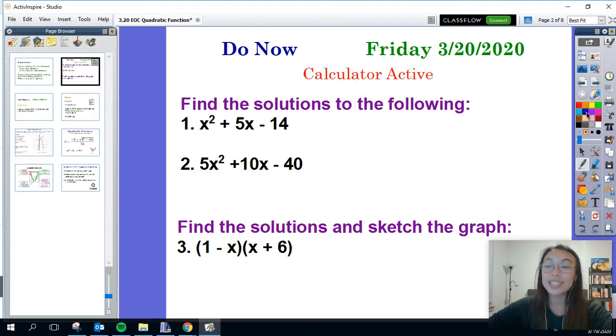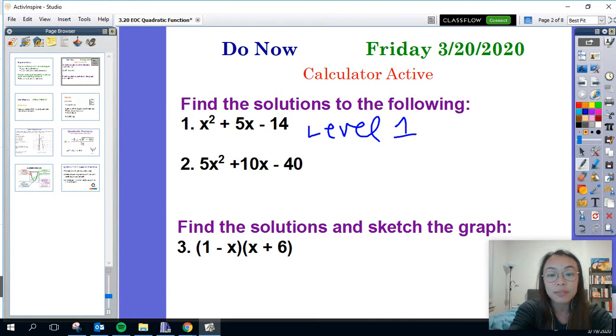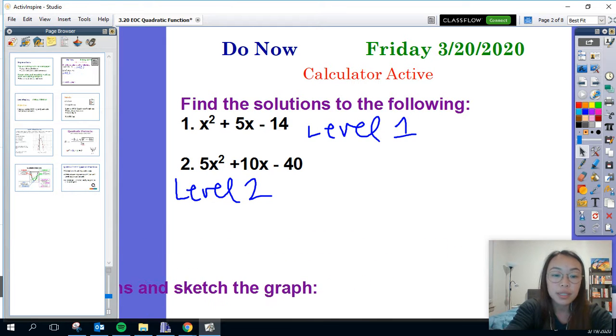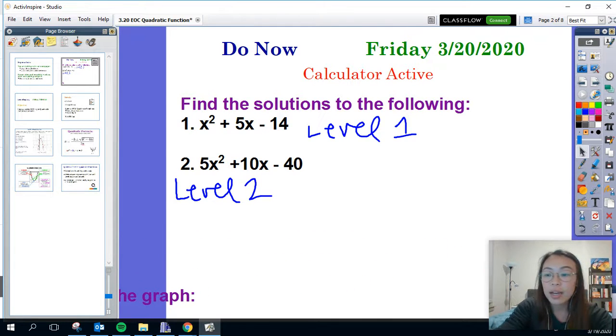If you guys need a hint or if you want to figure out how to do these, there's so many different ways that you can. All of these should be done by hand. So you should not be using decimals. I can identify number one as a level one, number two as a level two, and number three, we're going to come back to.